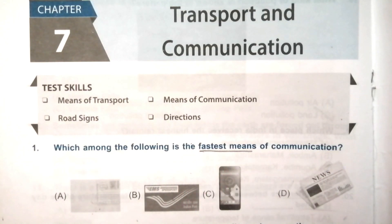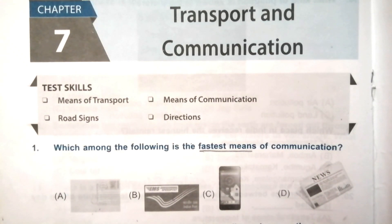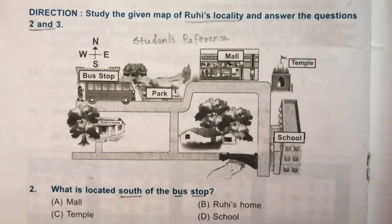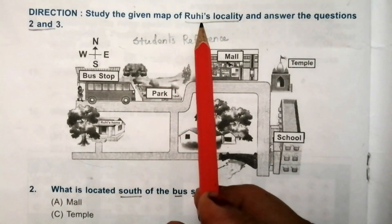Today's first question is: which among the following is the fastest means of communication? Look at the given options carefully. The answer is C — mobile phone.